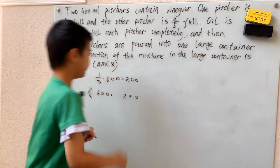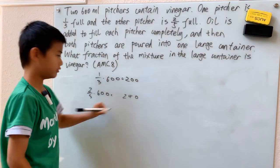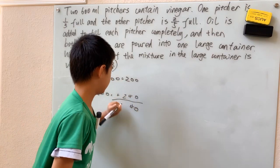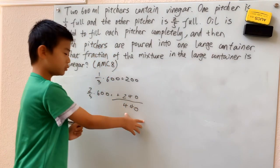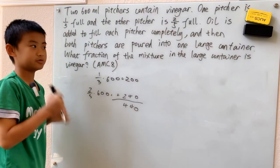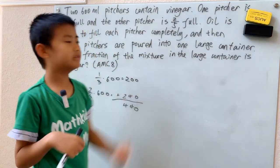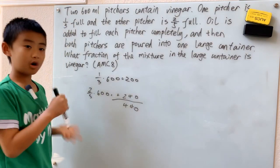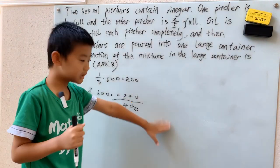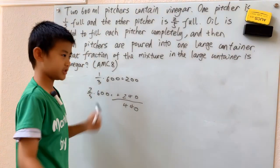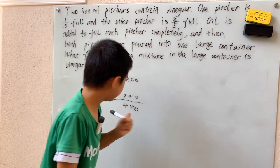200. Now to find the total vinegar, we just add these up. So basically 440 milliliters, that's how much vinegar is in the mixture in a large container. And now all we need to do is find how much mixture there is in a large container. Well that's just 600 plus 600 when we poured the pitchers together.